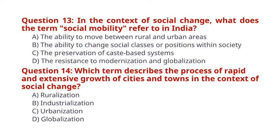Question 14. Which term describes the process of rapid and extensive growth of cities and towns in the context of social change? The correct answer for question 14 is option C: Urbanization.